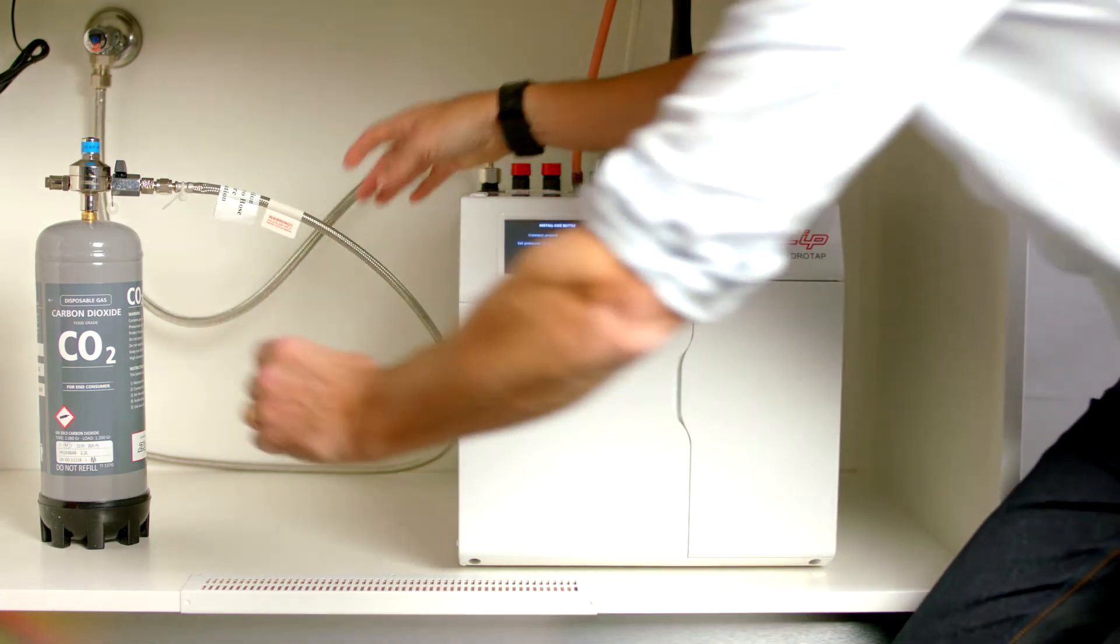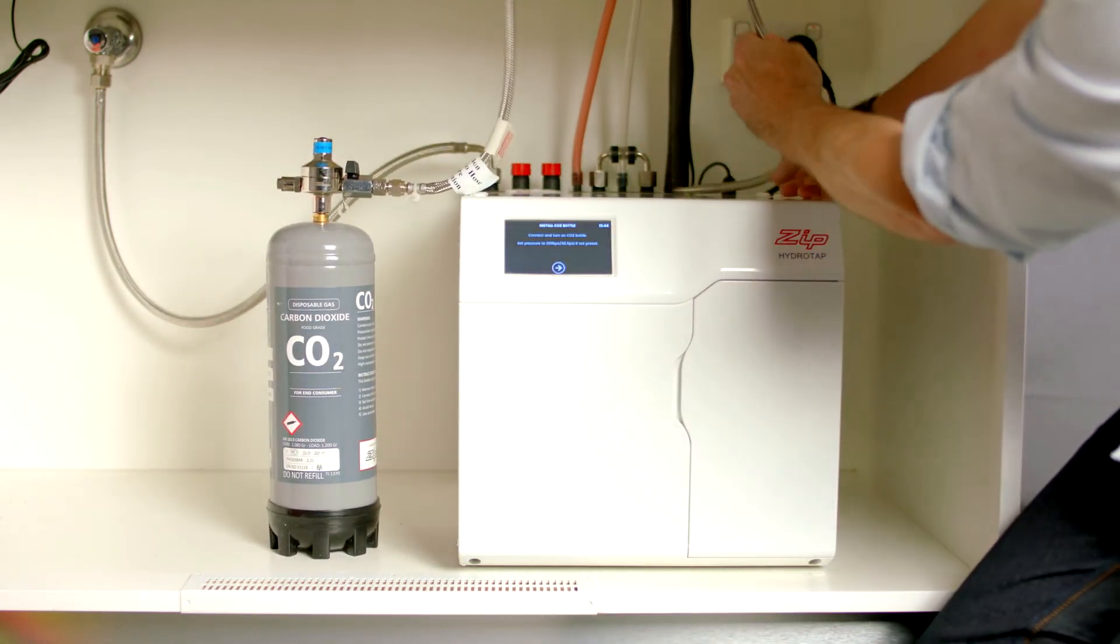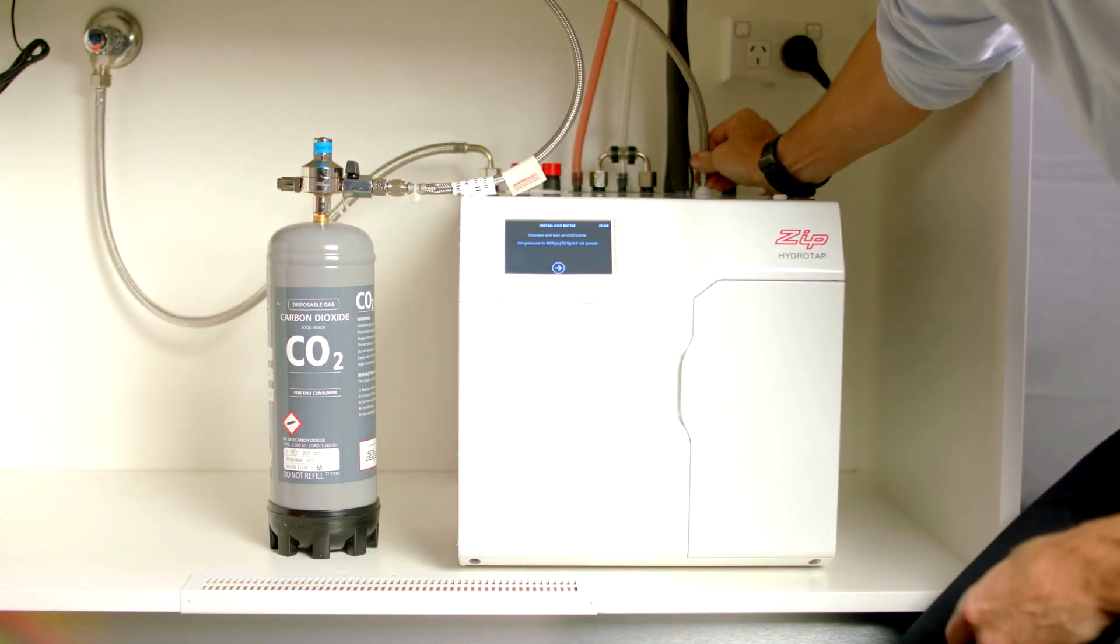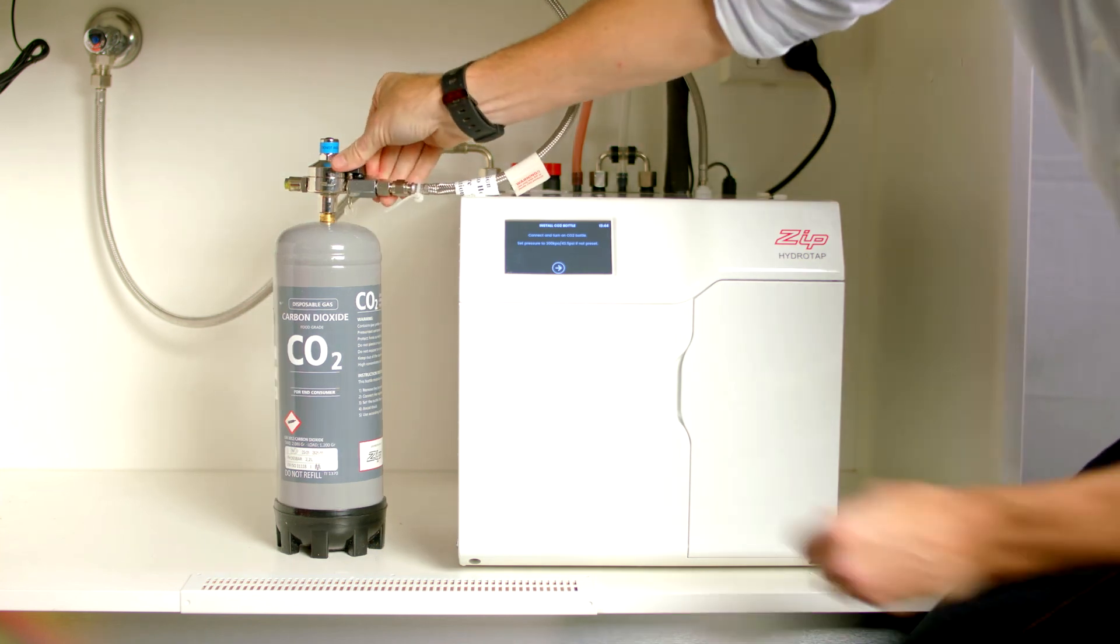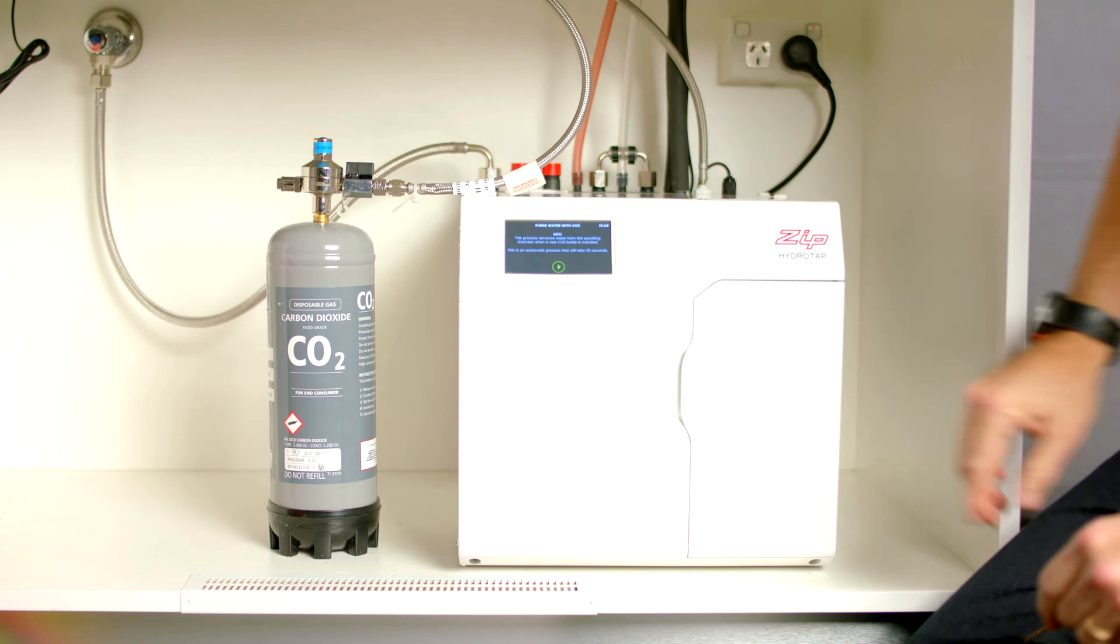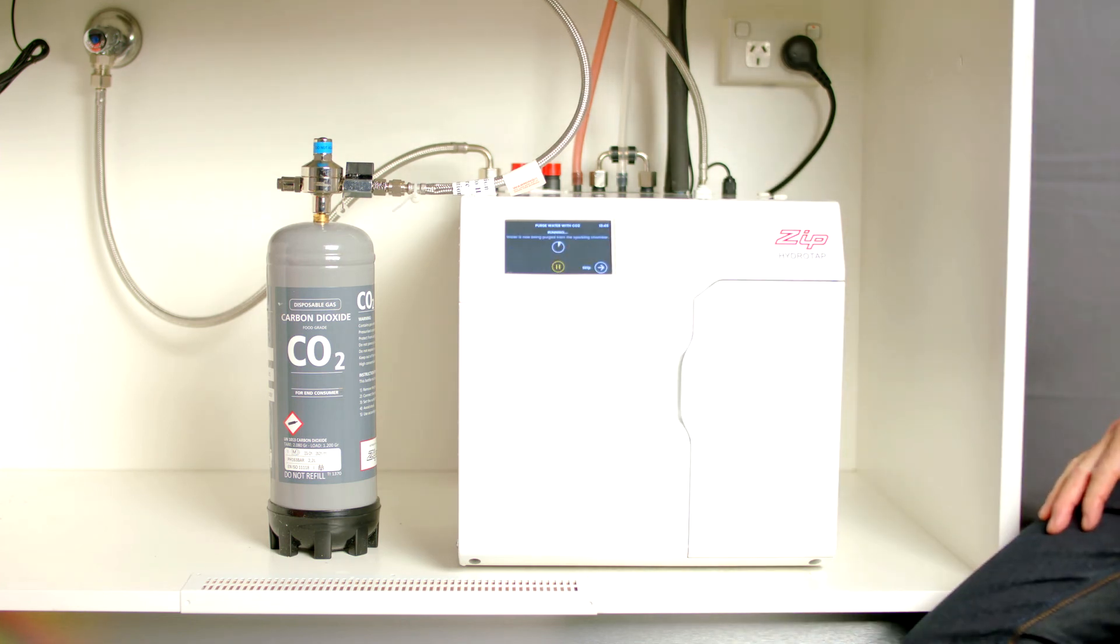Once complete the screen will ask you to connect and turn on the CO2 bottle. If you have a preset regulator turn the regulator fully on. If you need to set the pressure of the CO2 set it to 300 kPa or 43 psi. Once connected press the play button to start the CO2 purge which will take 30 seconds.